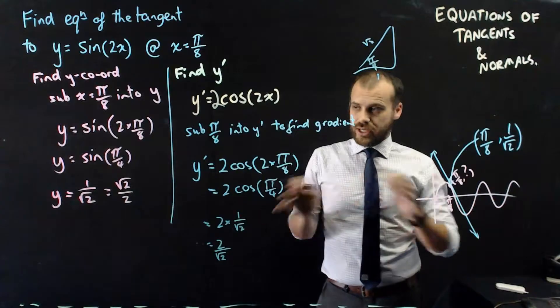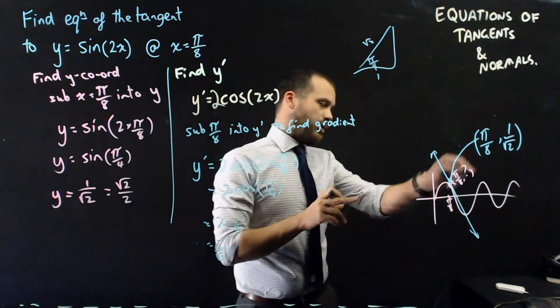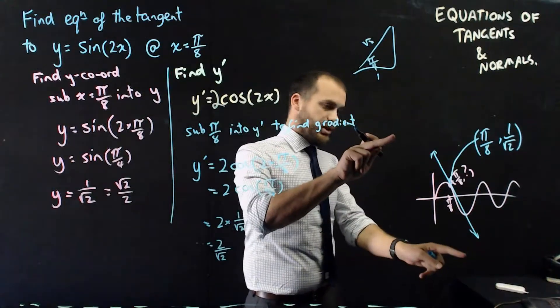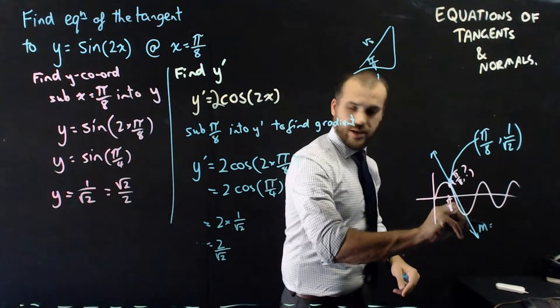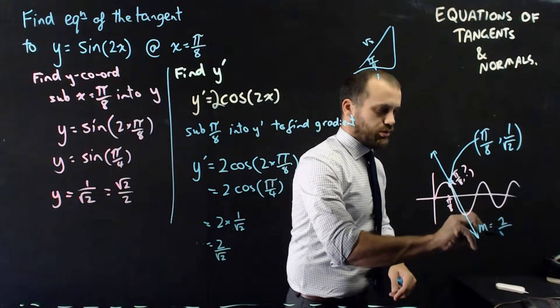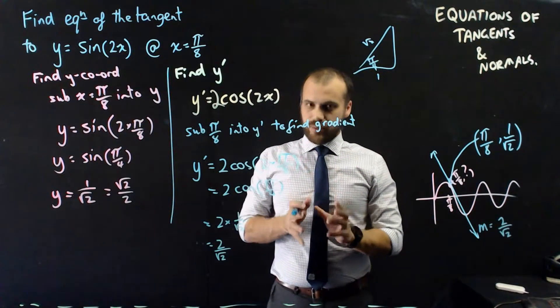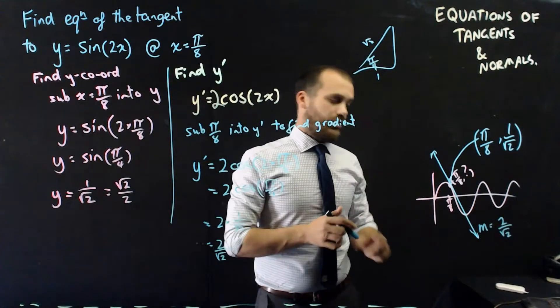So what have I done? I found a point π on 8, 1 on root 2. And now I know the gradient of that line is going to be, the gradient equals 2 on root 2.